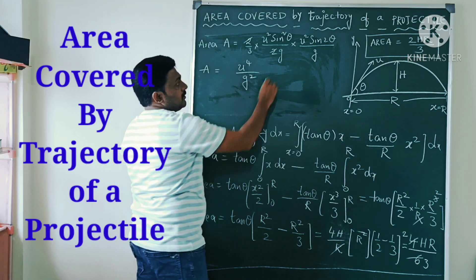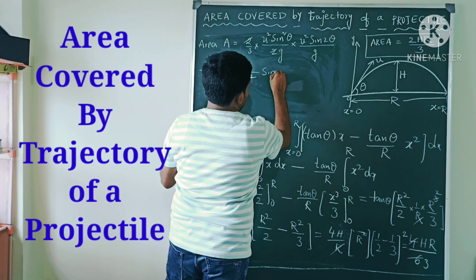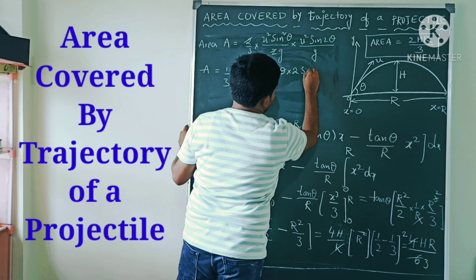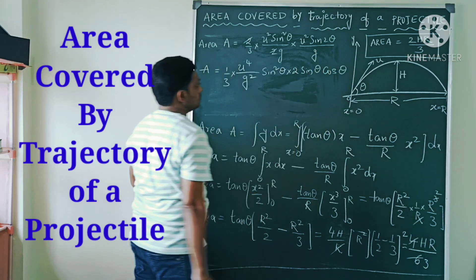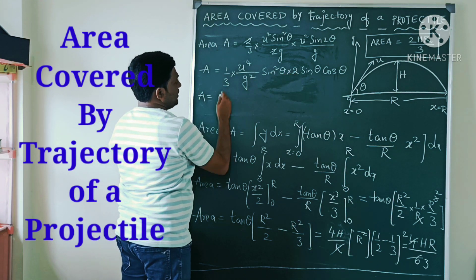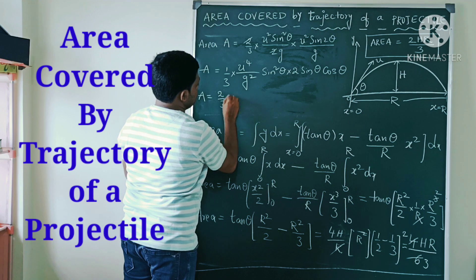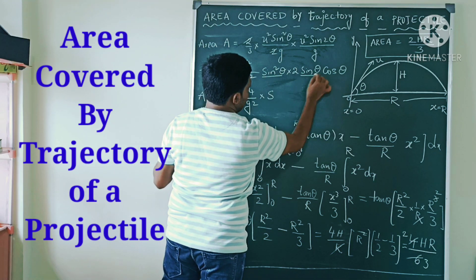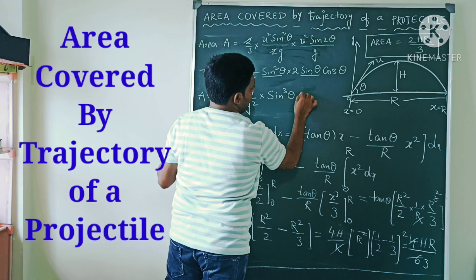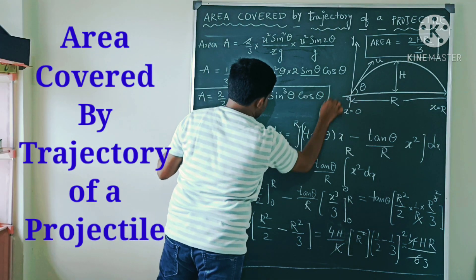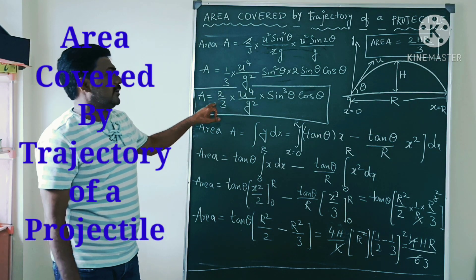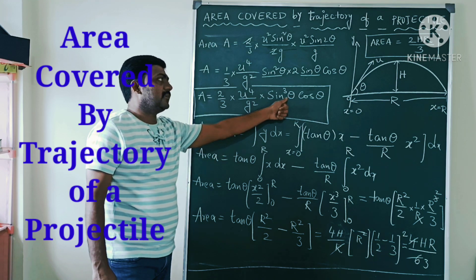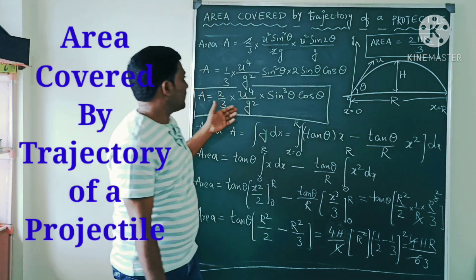Simplifying further: u⁴/g² remains. The sin²θ term stays, and sin 2θ = 2 sinθ cosθ, so the (1/3) factor and the 2s combine to give sin³θ · cosθ. Therefore Area = (2/3) · (u⁴/g²) · sin³θ · cosθ. This is the area equation expressed in terms of the initial velocity of projection u and the angle of projection θ. We can write the area equation in these two ways.